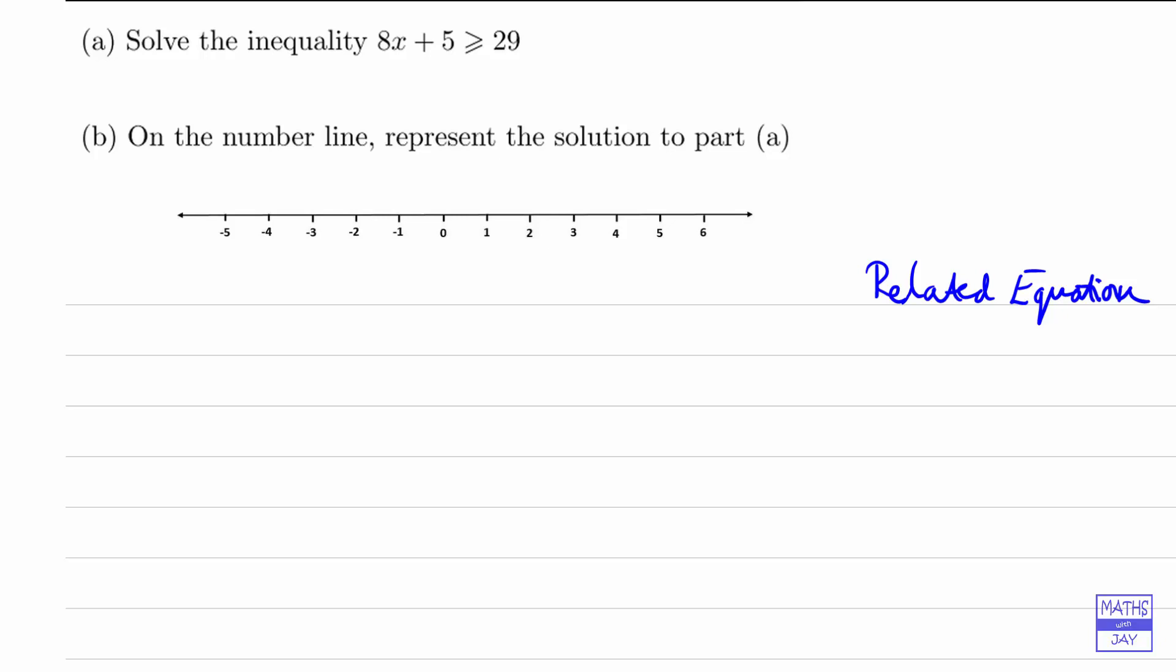So that would mean the equation would be 8x plus 5 equals 29. If you think about what you would do to solve that, you would subtract 5 from both sides, so 8x is 24, and then divide both sides by 8, so x equals 3. You would check your answer by multiplying 8 by 3, which is 24, plus 5 is 29, so that's the right answer.